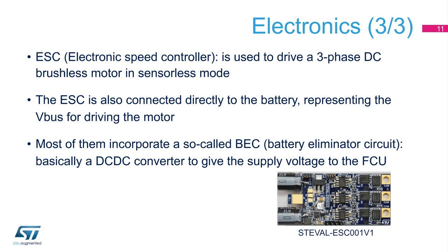An electronic speed controller, ESC, is used to drive a three-phase DC brushless motor in sensorless mode. Generally, it receives an input signal up to 500 Hz PWM from the FCU with a pulse width varying from 1ms for motor off to 2ms for motor full speed. The ESC is also connected directly to the battery, representing the V-bus for driving the motor. Most of them incorporate a so-called BEC, battery eliminator circuit, which is basically a DC-DC converter to supply voltage to the FCU.